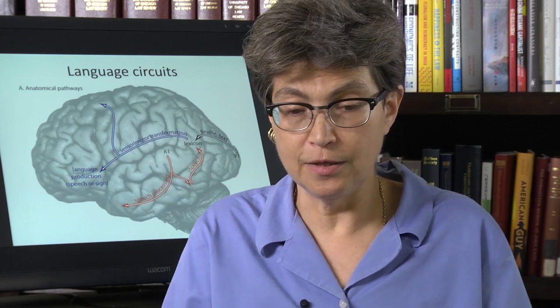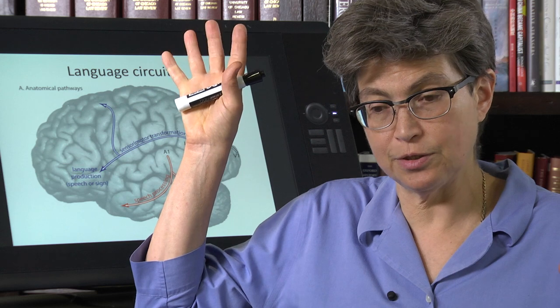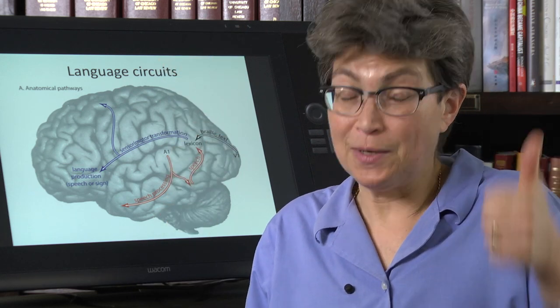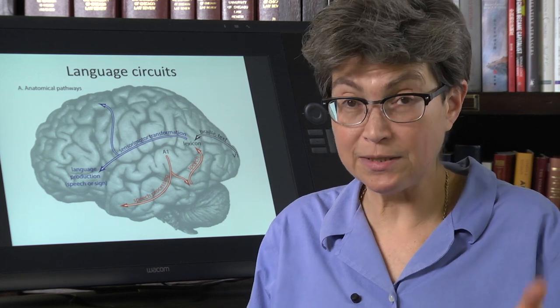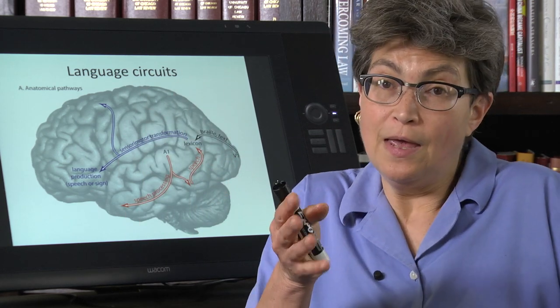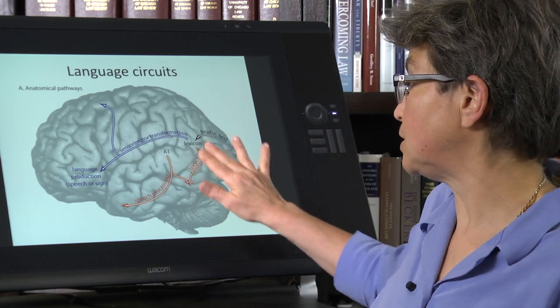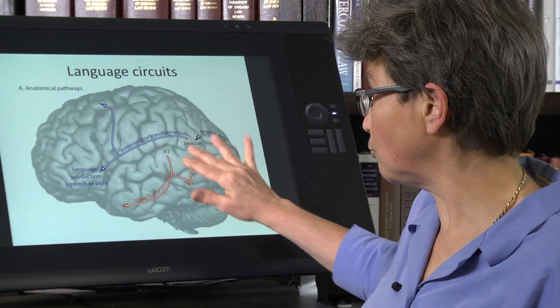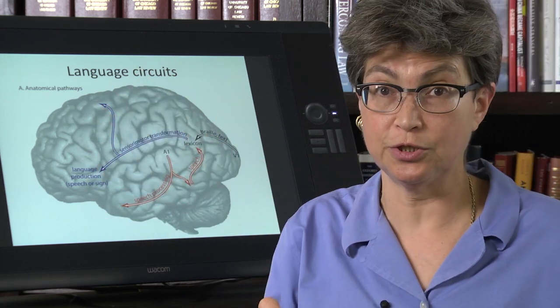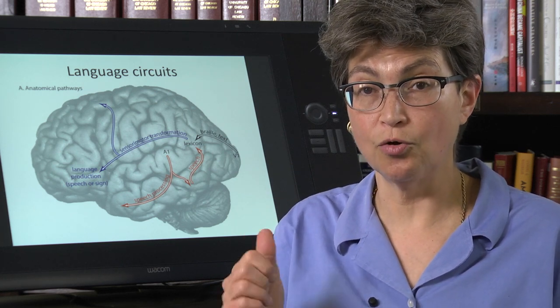But this is what you really want to remember. You want to remember that there is, first of all, that language depends on the left. The semantics of language depend on the left. The prosody depends on the right. And within the left hemisphere, these more caudal regions, the temporoparietal region is involved in comprehension, whereas the frontal area regions are involved in production. And it's production of language, not of speech.